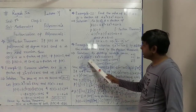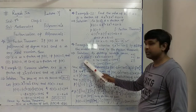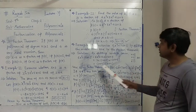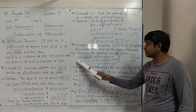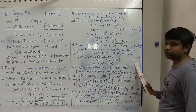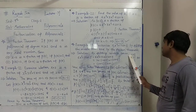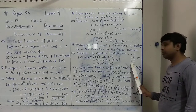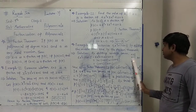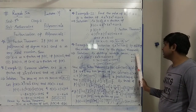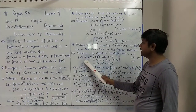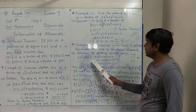6x squared plus 17x plus 5 — the middle term is 17x. We have to split this. In splitting the middle term, the first and last terms give 6 times 5 equals 30 as the product, and plus 17 as the sum. If you take 15 and 2: their addition is 17 and 15 times 2 is 30. So we split the middle term 17 into 15 and 2. That gives: 6x squared, then 15x plus 2x, plus 5.